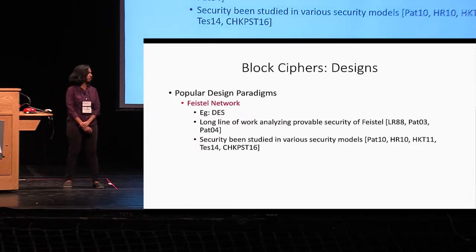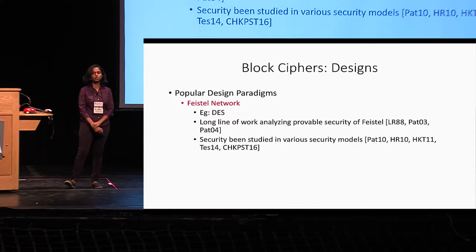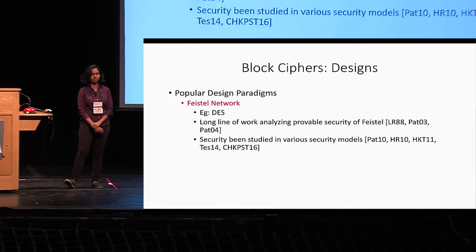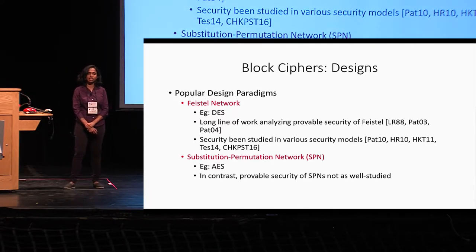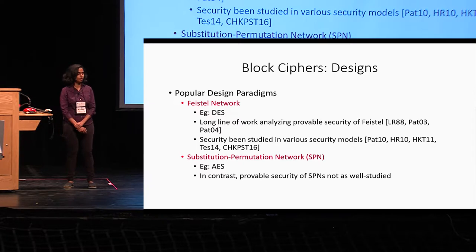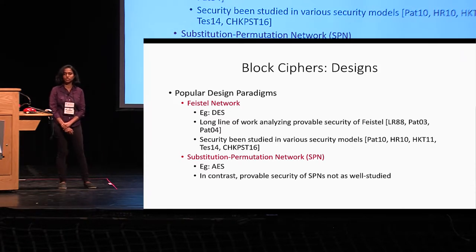The Feistel network has been long studied. There is a long line of work starting with the seminal work of Luby and Rackoff studying the provable security of Feistel, and its security has been considered in various other security models. SPNs, on the other hand, have not been studied as extensively in the context of provable security. This is surprising given that SPNs have been around for a few decades and many popular block ciphers, in particular AES, are based on the substitution permutation network.